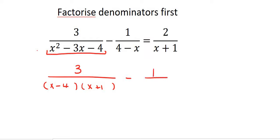Then there would be minus 1 over 4 minus x equals to 2 over x plus 1. These two denominators cannot be factorized any further. Now have a look here. We're starting to see a bit of a similarity happening over here.